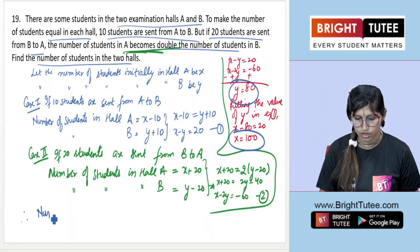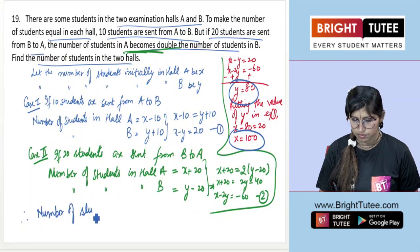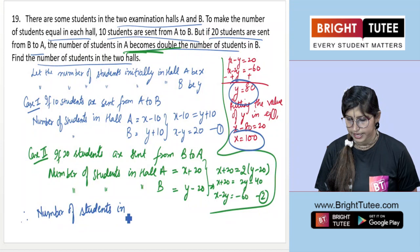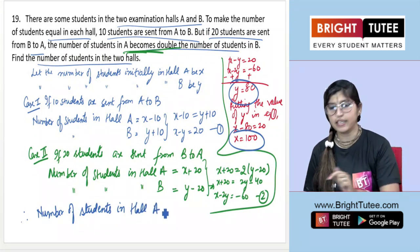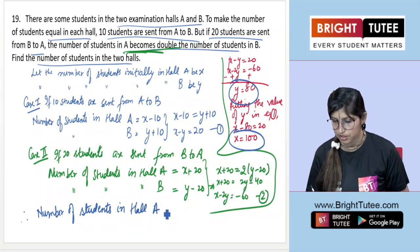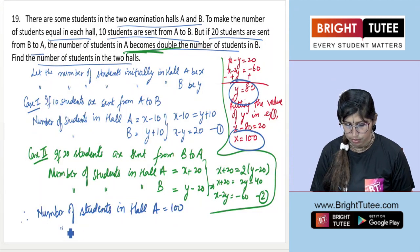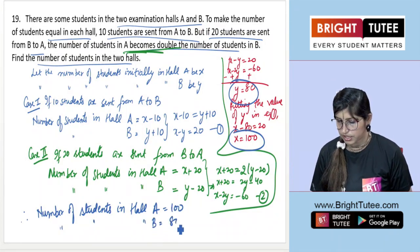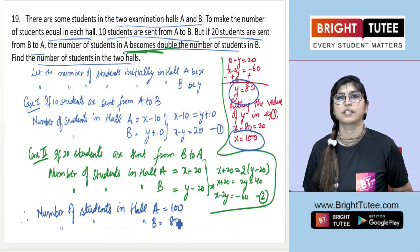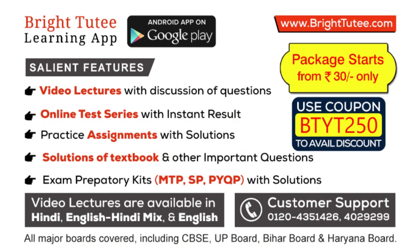Therefore, the number of students in hall A, which we took as x, is 100, and the number of students in hall B is 80. I hope you understood this question. If you have any doubts, please write them in the comments. Thank you so much.